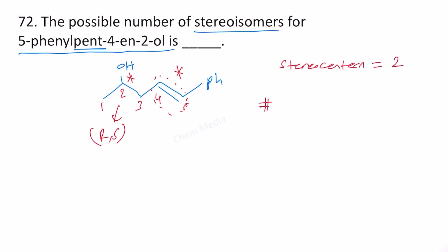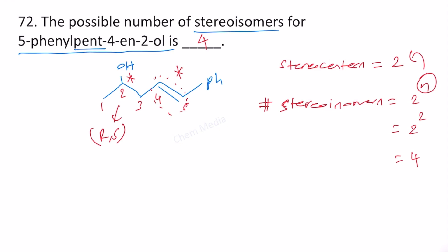We know that the number of stereoisomers is equal to 2 to the power n, where n is the number of stereocenters. Therefore this is 2 to the power 2, which equals 4. Therefore the correct answer is 4.